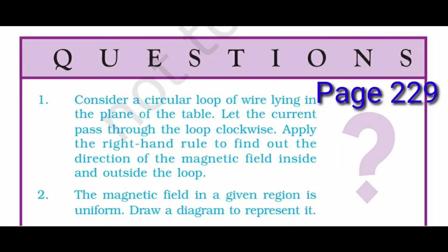Page 229, Question 1: Consider a circular loop of wire lying in the plane of the table with current passing clockwise. Applying the right-hand rule, the direction of magnetic field inside the loop is perpendicular to the plane of the table and directed inwards. Outside the loop, the direction of magnetic field is perpendicular to the plane of the table and directed outwards.